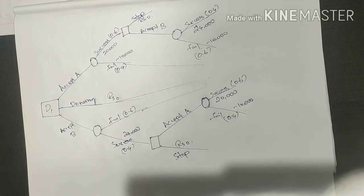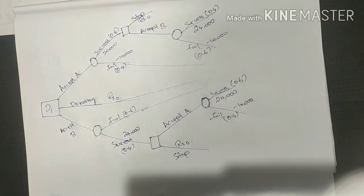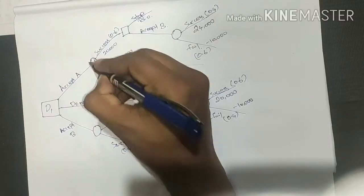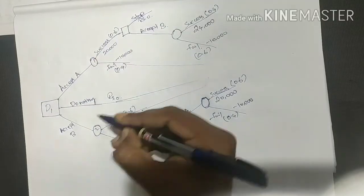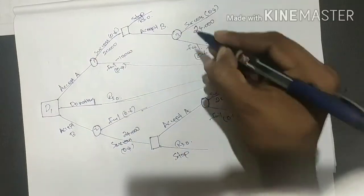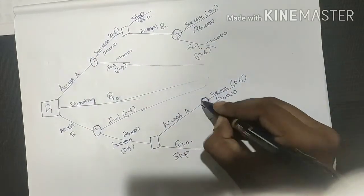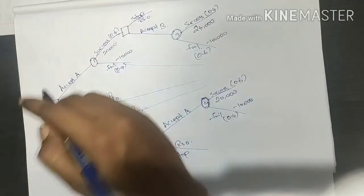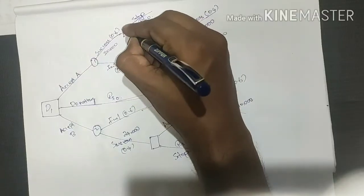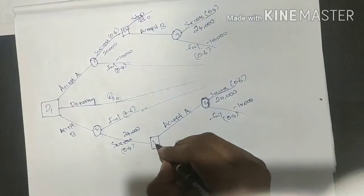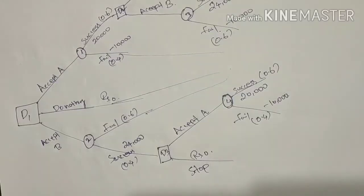Next, we will do the EMV calculation. The EMV calculator covers nodes 1, 2, 3, and 4 — that is decision nodes D1, D2, and D3.